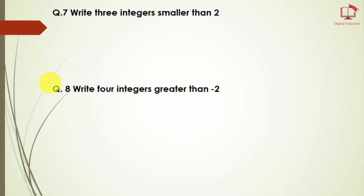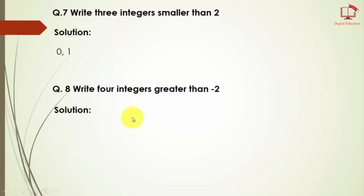Question number 7: write 3 integers smaller than 2. The integers smaller than 2 are, for example, 0 and 1, and you can include others smaller than 2. Question number 8: write 4 integers greater than minus 2. The solution is minus 1, 0, 1, and 2 — these are the 4 integers that are greater than minus 2.